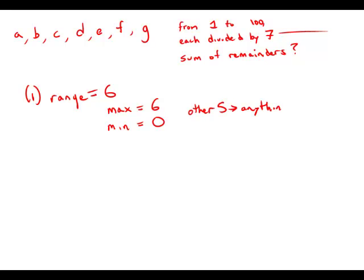Because the other five numbers can be anything, there is absolutely no way to determine exactly what the sum of the remainders is. So Statement 1 by itself does not give us enough information to answer the question — it is insufficient.